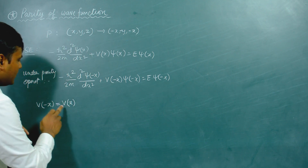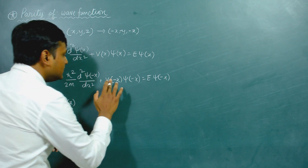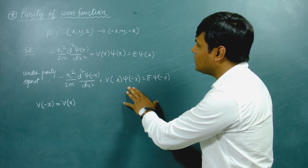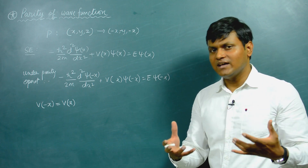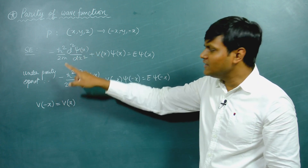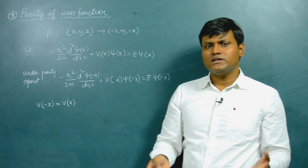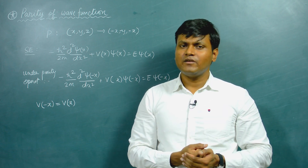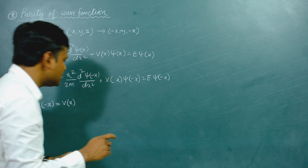Under this condition, if the potential is symmetric with respect to reflection on the coordinate axis, then V(−x) simply becomes V(x). Now, if you look at both of these two equations, they are exactly similar except that one solution is ψ(−x) and the other is ψ(x). The solutions of the Schrödinger equation are determined by the nature of the potential, and the nature of the potential is the same in both cases, so the solutions should have the same form.